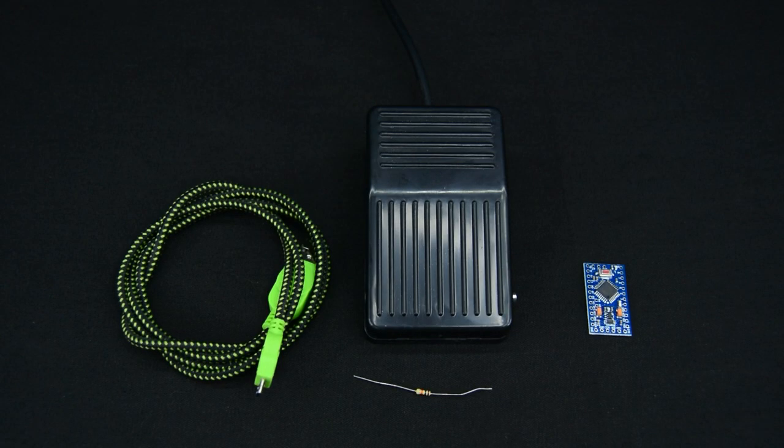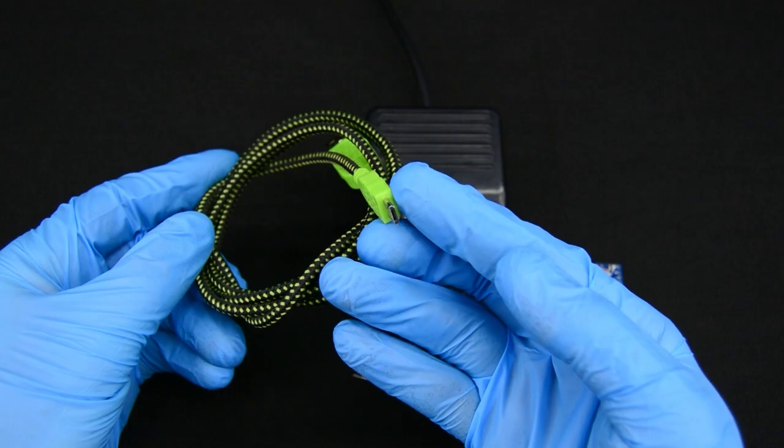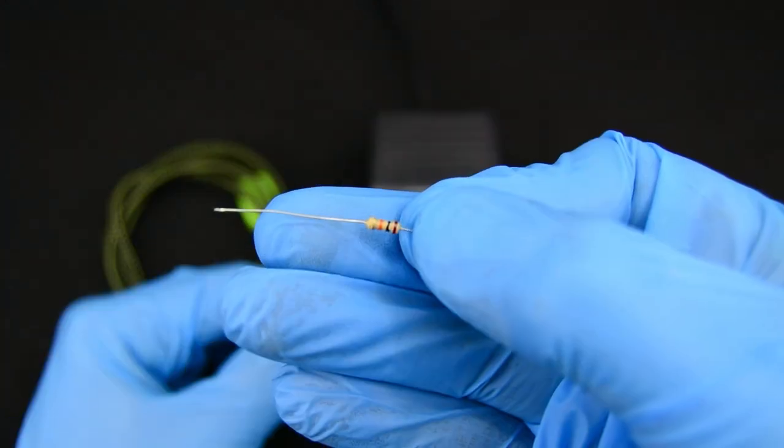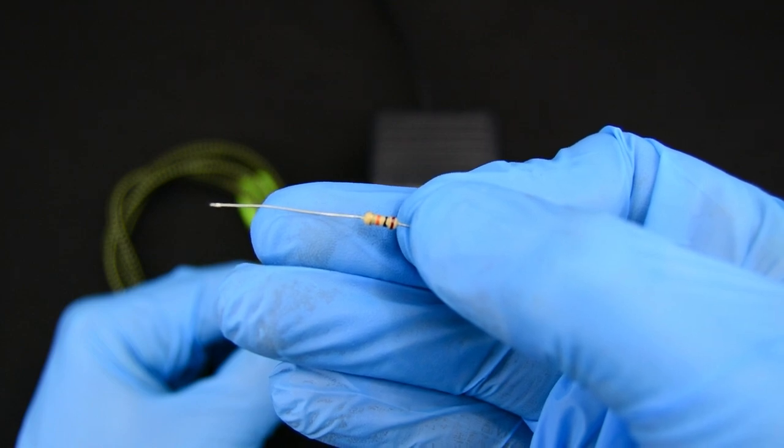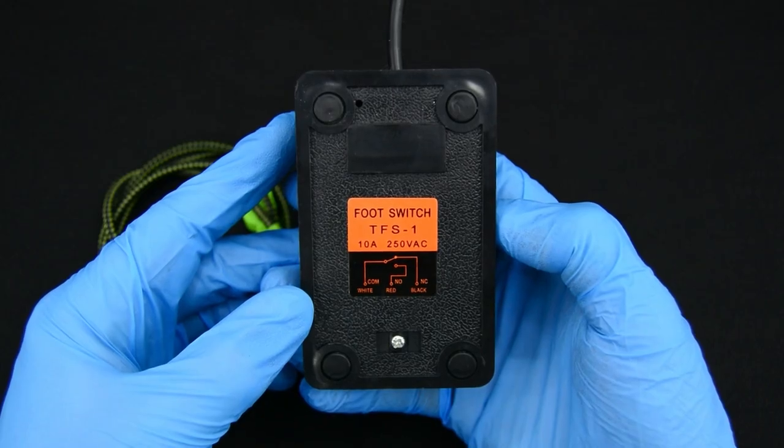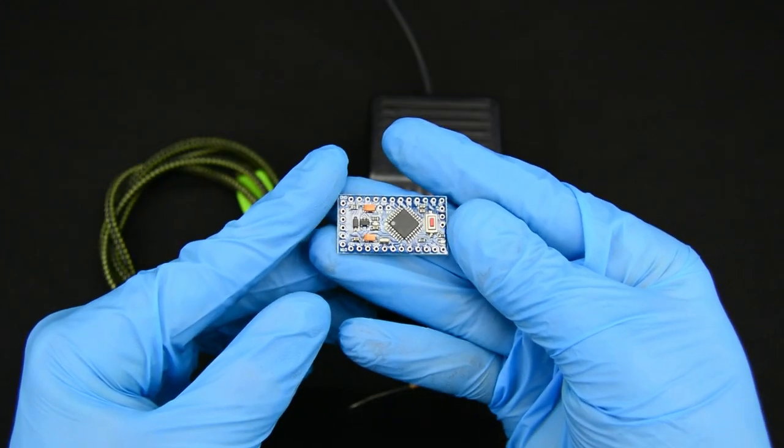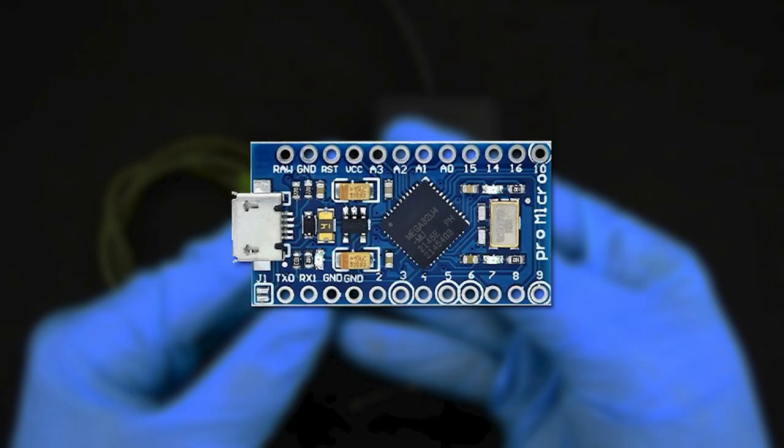Things I used to make the footswitch: USB to micro USB cable, one quarter watt 10 ohm resistor, any kind of footswitch, and Arduino Pro micro clone rated for 5 volts with ATmega 32u4 chip.